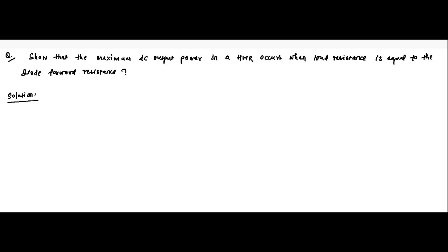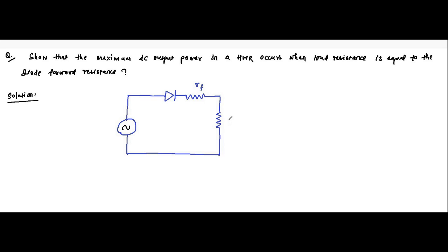First, let us draw the circuit for a half wave rectifier. We have the AC supply, then we have the diode with a certain forward resistance, and then we have a load resistance with the supply.